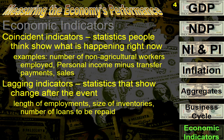Then there are lagging indicators, which show what happened in the past and what we are seeing right now. For example, the length of employment would be a really big one. You're not really going to know the length of employment until someone's fired. If people have been working long periods of time, that means the jobs are secure, the people are happy with what they're doing, and they're being productive. But if that time of employment starts to shrink, that means more people are getting fired.